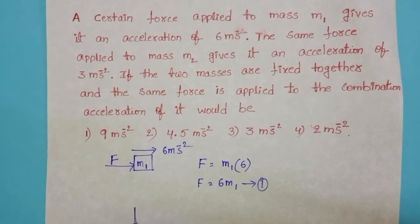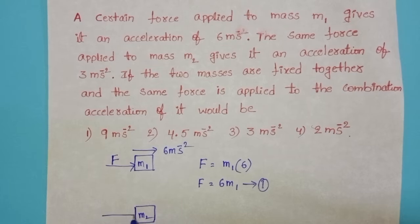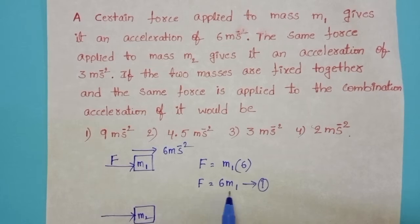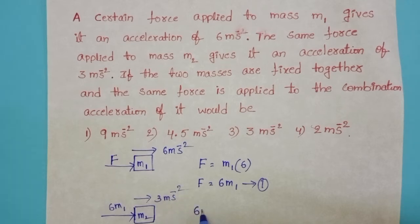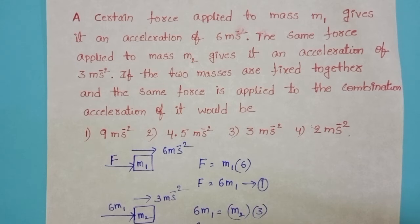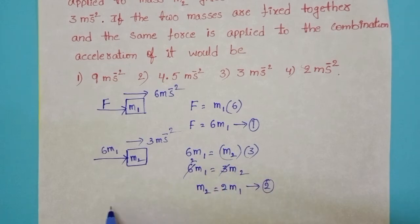The same amount of force is applied on another object of mass M2. Since F equals 6M1 and this body accelerates at 3 meters per second square, we get 6M1 equals 3M2, therefore M2 equals 2M1. Take this as Equation 2.